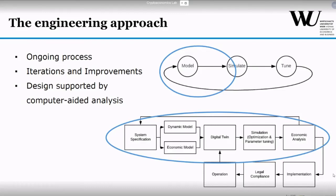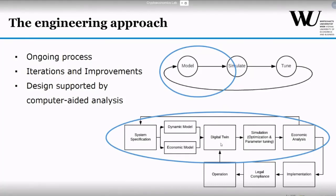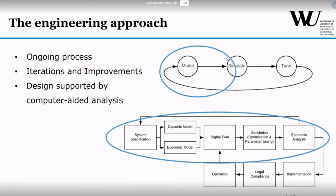You can play around with the digital twin to see what might happen and how to structure incentive mechanisms so that intended outcomes occur. The digital twin can be simulated, economic analysis done on results, then fed back into system specification. Once you're confident, you go into implementation — coding the blockchain economy. Next you look at legal compliance and operation. And even then you're not finished; you continue feeding back into the digital twin to maintain and improve the live economy.